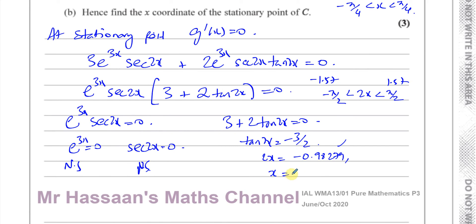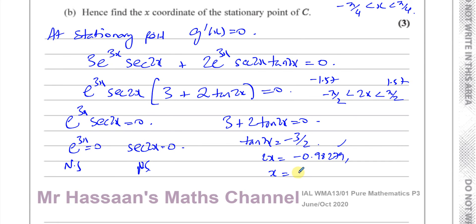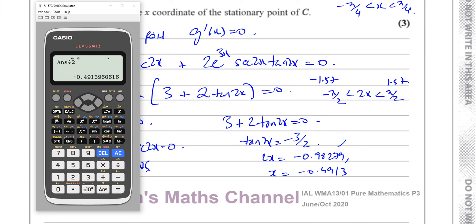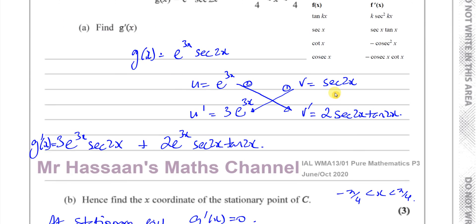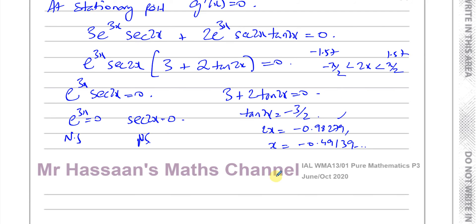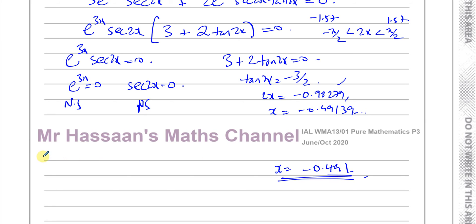So we have our solution for 2x. We divide it by 2 to get x. Dividing gives us minus 0.4913. They didn't specify how to write the answer, so I'll write it to 3 significant figures: x equals minus 0.491. That is the x-coordinate of the stationary point of this curve. Always round to 3 significant figures unless otherwise stated.